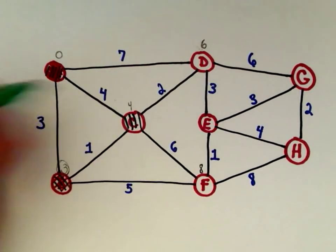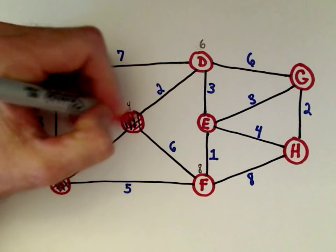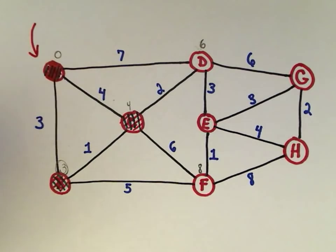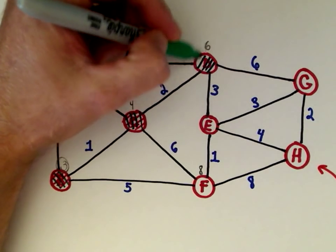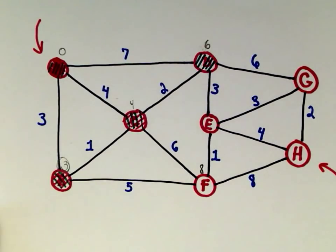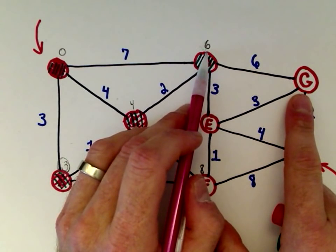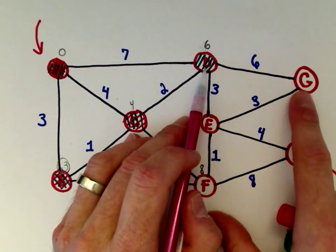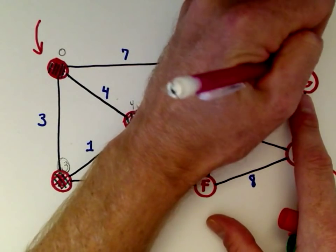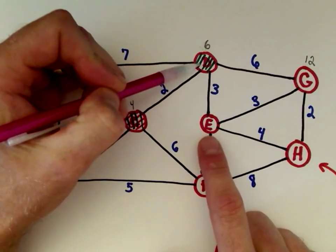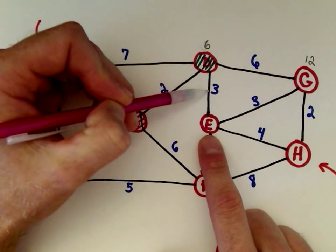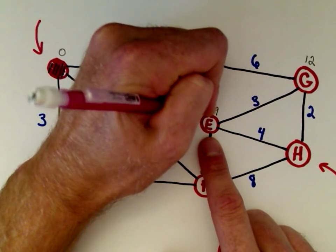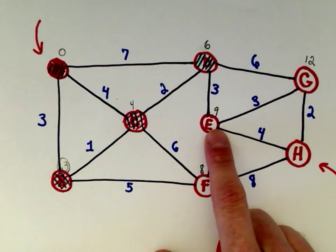We're trying to find the shortest length from vertex A to vertex H. Let's work with vertex D. From vertex D to vertex G: we found a path length of six to D, and D to G is another six, so six plus six is 12 — I'll put 12 above G. We can also travel from vertex D to vertex E: path length of six, plus three, gives us nine. So I'll label vertex E with nine.